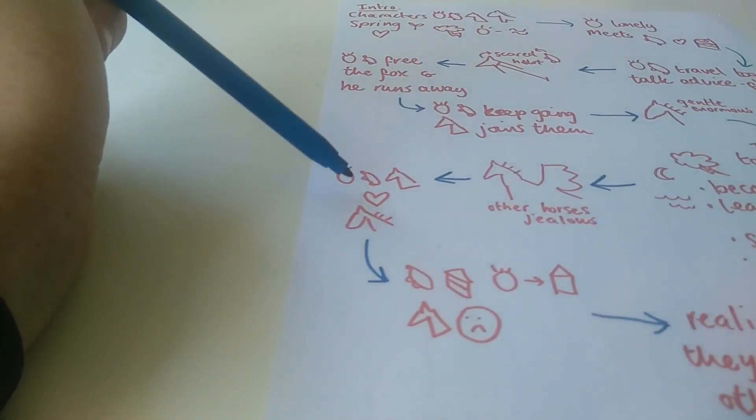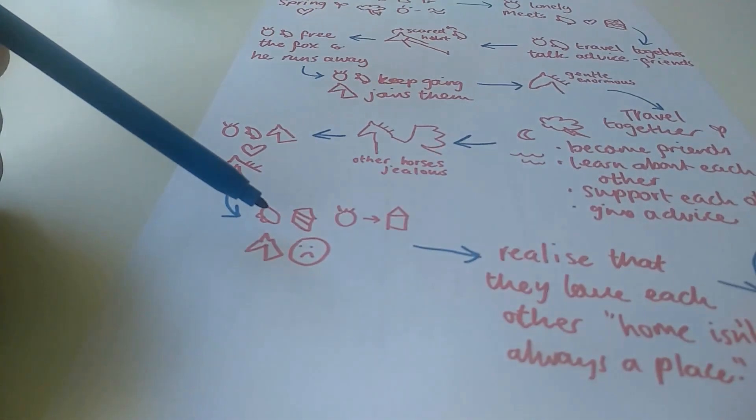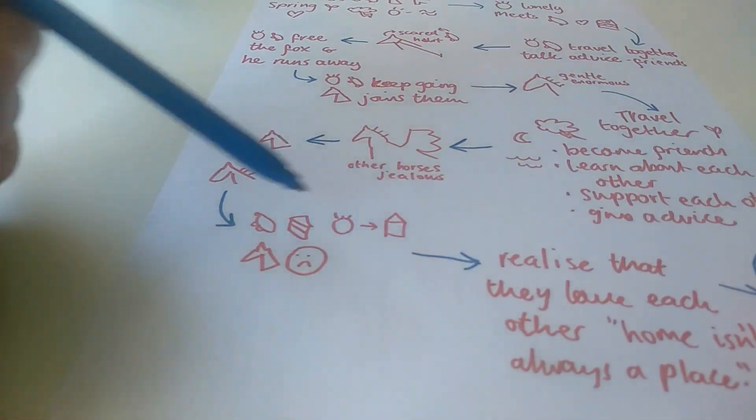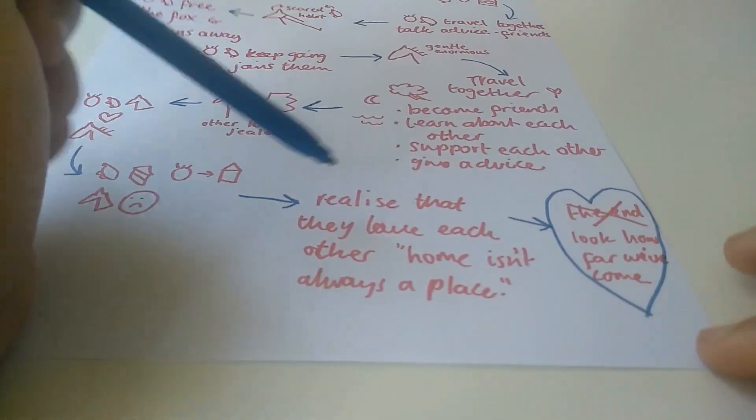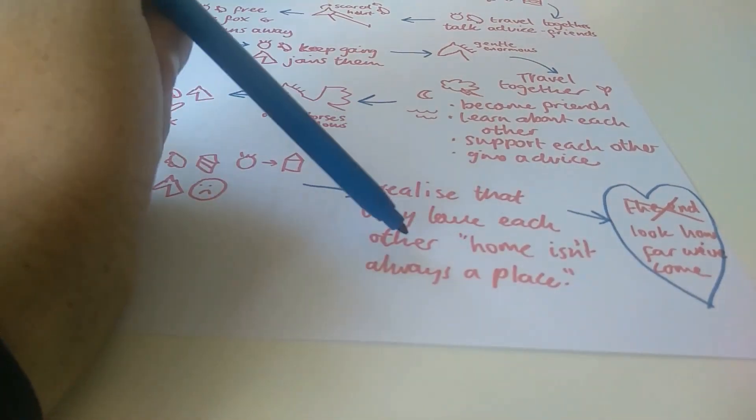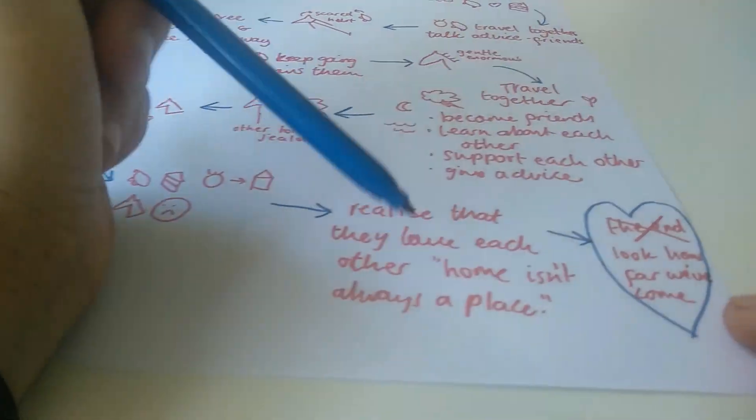But the boy, the mole and the fox all tell the horse that they love him anyway. And the mole still loves cake. And the boy wants to be home. And the fox is really sad and hurt and quiet. But they realize that they all love each other and that home isn't always a place. And they stay friends forever. There we go.